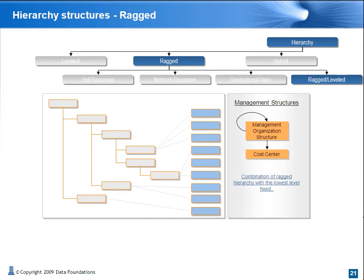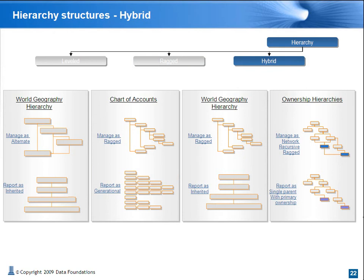Most common examples of combination hierarchies involve management hierarchies that are inherently ragged and linked to the lowest-level cost center, or entities similar to that, to form the lowest level. Then there are combination strategies, or hybrids, where management of hierarchies is optimized and additional reporting views are employed to create a flattened structure. An example of this we just saw with the geographic hierarchy a couple of slides ago, and option three is the illustration of the same type.